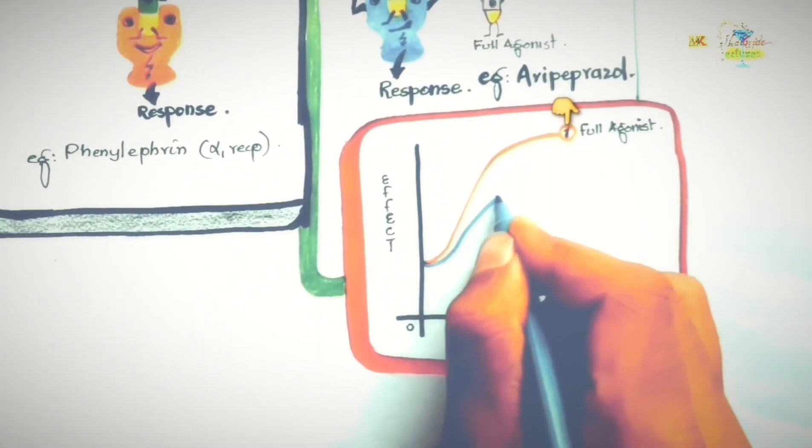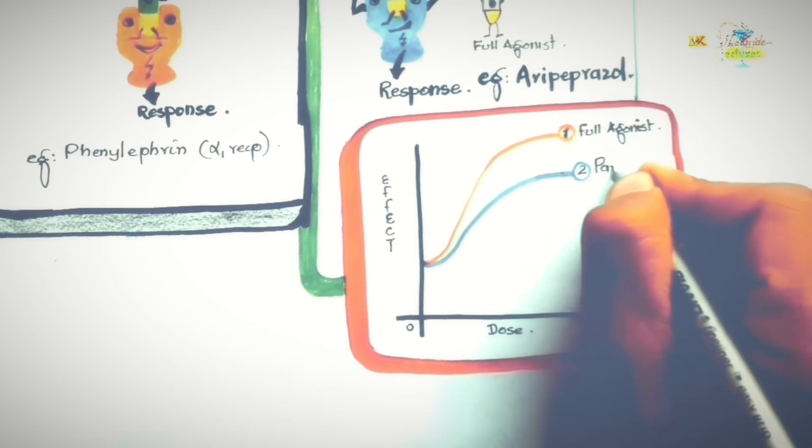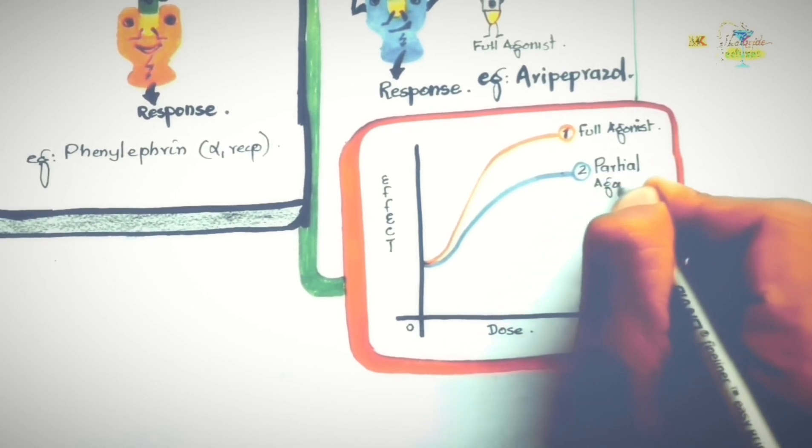If we consider the first graph for the full agonist at the same receptor, then the partial agonist effect would be like this.